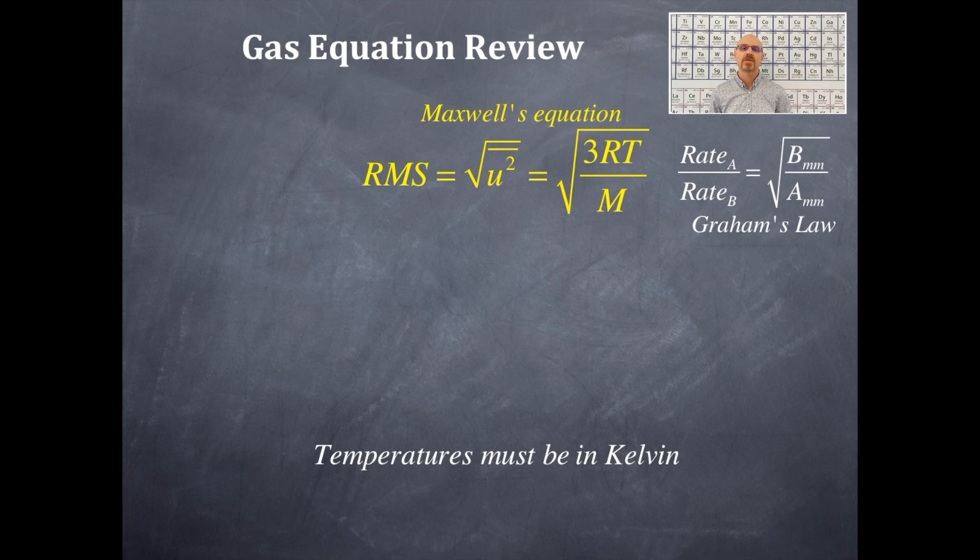Just a little hint. If you get a number on this problem, when you get a number on this problem, if the number is greater than 1, then that gas is going faster. If that number is less than 1, then that gas is moving slower. You could take the reciprocal of it and then flip that. That works too. That's Graham's law.